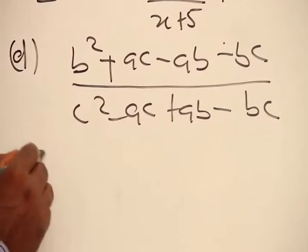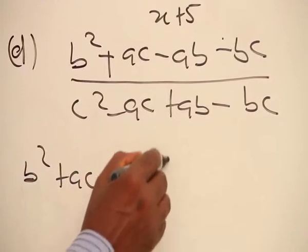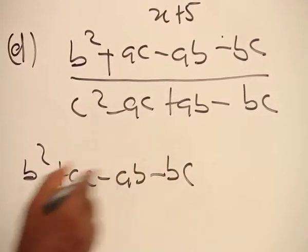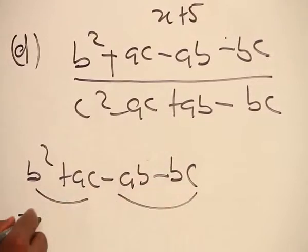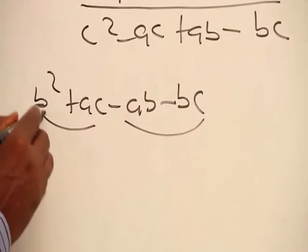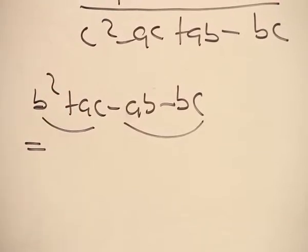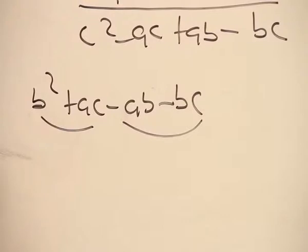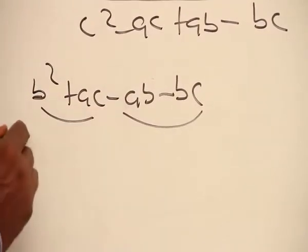So b squared plus ac minus ab minus bc will actually be equal to pairing this and pairing that. We have here b squared and ac have nothing in common. So if you pair them like this, it does not work. So we rearrange.